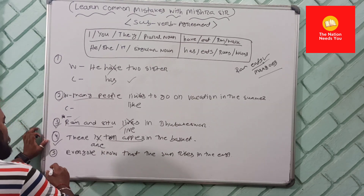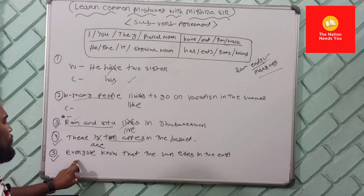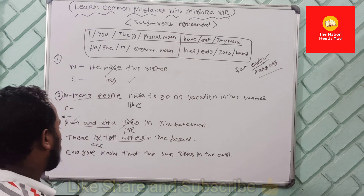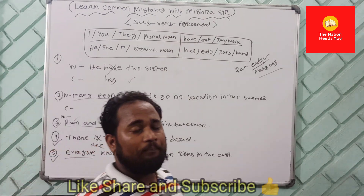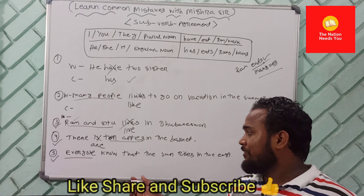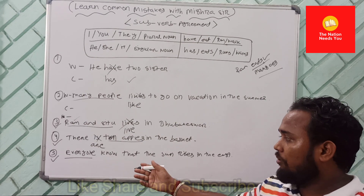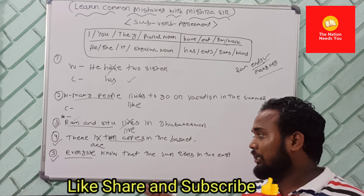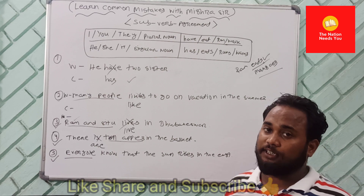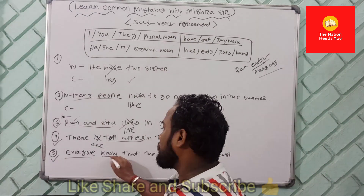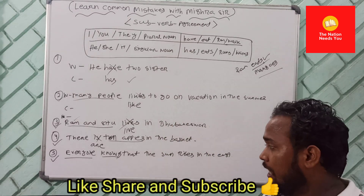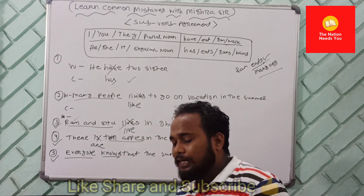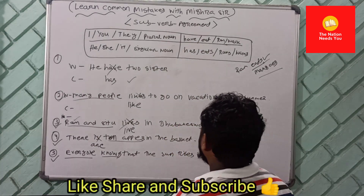Now, one more example: 'Everyone knows that the sun rises in the east.' Always remember — everyone, everybody — these are all always singular. Just like 'police' is always plural, 'everyone' is always singular. So you add 's' to the verb: 'Everyone knows that the sun rises in the east.'